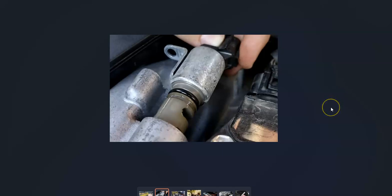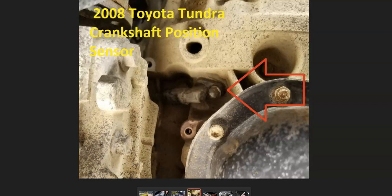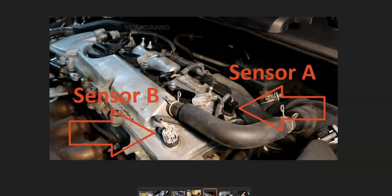If the VVT solenoid and wiring check out, the next thing to do is check the crankshaft position sensor and the camshaft position sensors. There's usually just one crankshaft position sensor and often two camshaft position sensors, but it can vary — you'll need to Google it for your specific Toyota. The crankshaft position sensor will be down near the crank towards the bottom of the engine, and the cam sensors will be up on top.